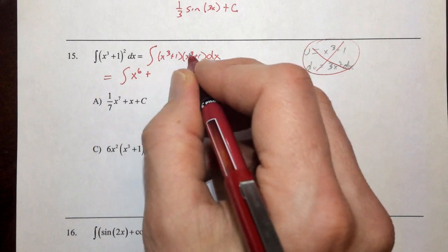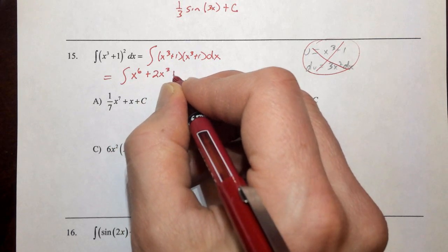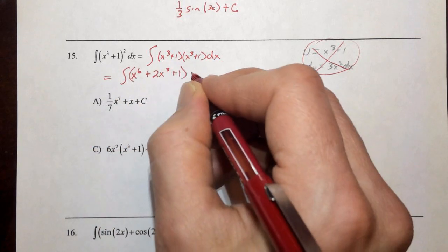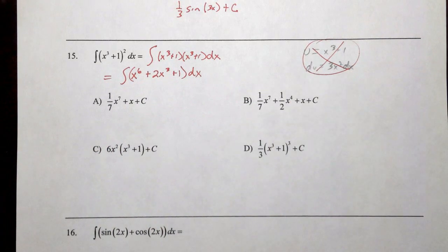and then we do outside and inside, we get x cubed and x cubed, so that's 2x cubed plus 1. So this is the antiderivative we need to find.